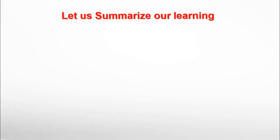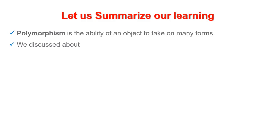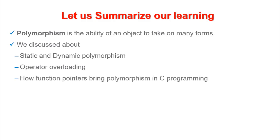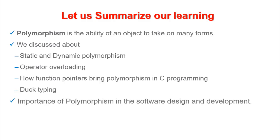Let us summarize our learning. We learned that polymorphism is an ability of an object to take on many forms. We discussed about static and dynamic polymorphism. We discussed about operator overloading. We discussed about how function pointers bring polymorphism in C programming. We talked about duck typing. We learned importance of polymorphism in software design and development.